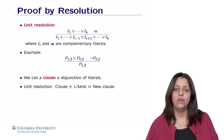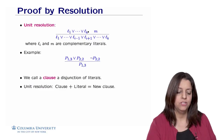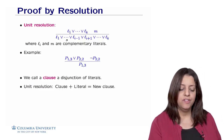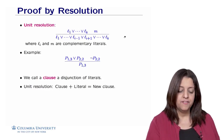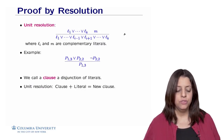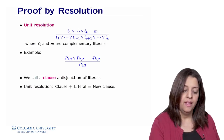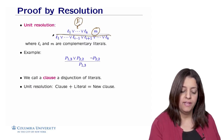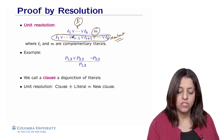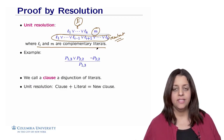Formally, resolution is based on unit resolution: given a clause L-1 or L-2 or ... or L-K, and a literal M, where L-I and M are complementary literals — meaning one is the negation of the other — we resolve them to obtain the clause with everything except L-I. In other words, the complementary pair L-I and M cancel out, and the resolvent is the disjunction of all remaining literals.